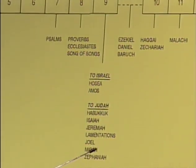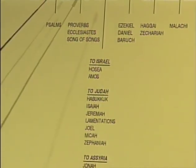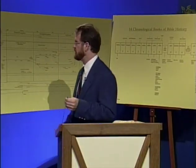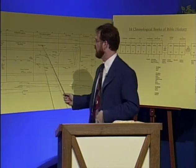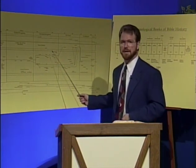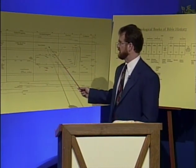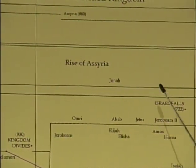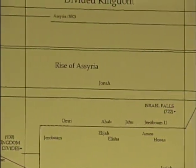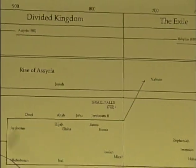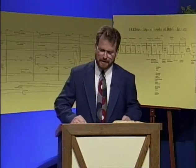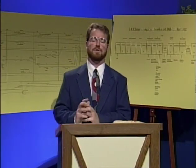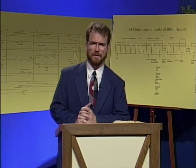Looking at our Bible timeline chart, we are in the Divided Kingdom period, which comes on the heels of the United Kingdom. King Solomon really had a downfall.